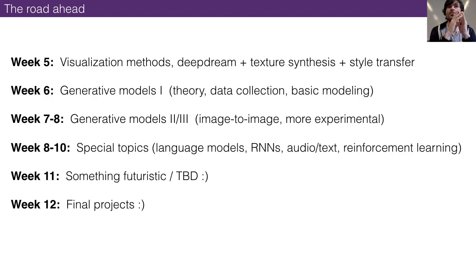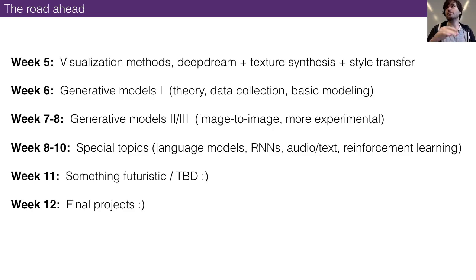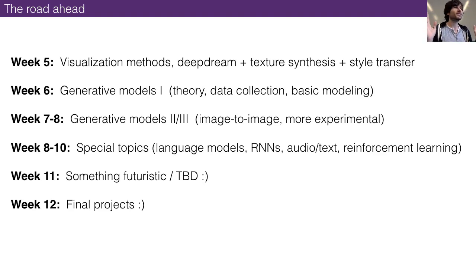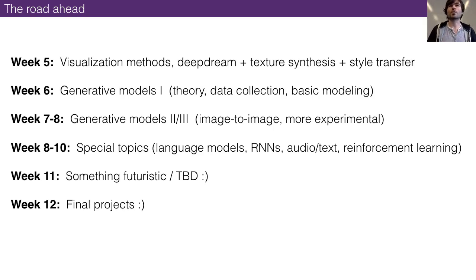The week after that we'll get into things like Pix2Pix and CycleGAN — image-to-image networks. And further along, around week eight, we'll start talking about more exotic varieties of generative models: very specialized models for things like text-to-image, image-to-text, sound-to-image, and so on, with tutorials on how to actually run them.